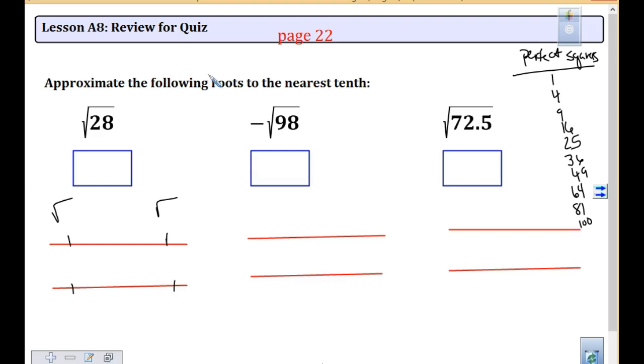We're going to go 25, we're going to go 36. Would you say just by looking at that, do you think it's closer to 5 or closer to 6? Closer to 5, right? Because 28 is pretty close to 25, right?